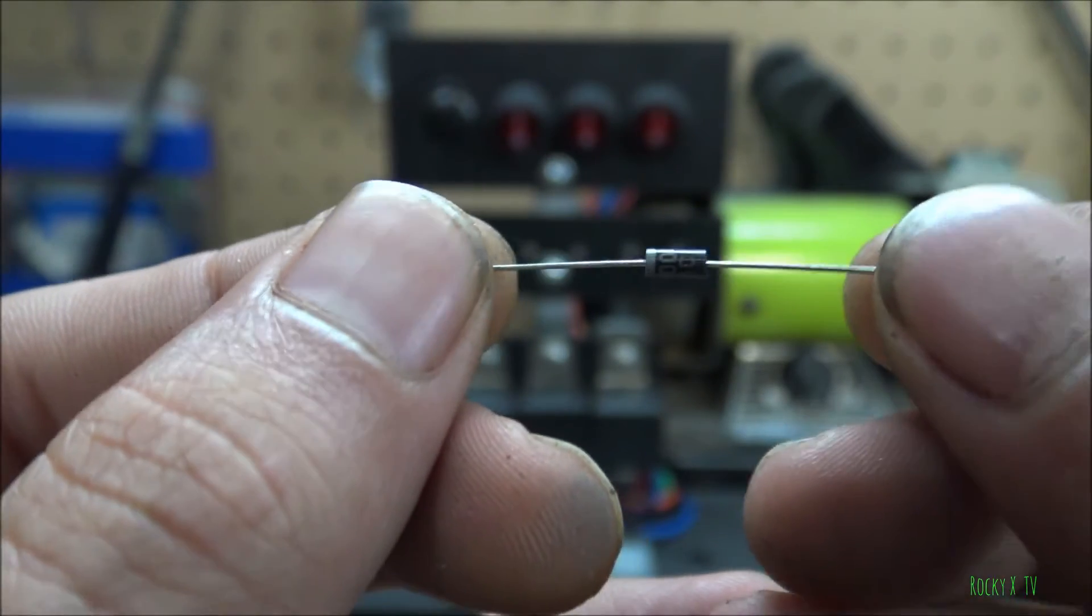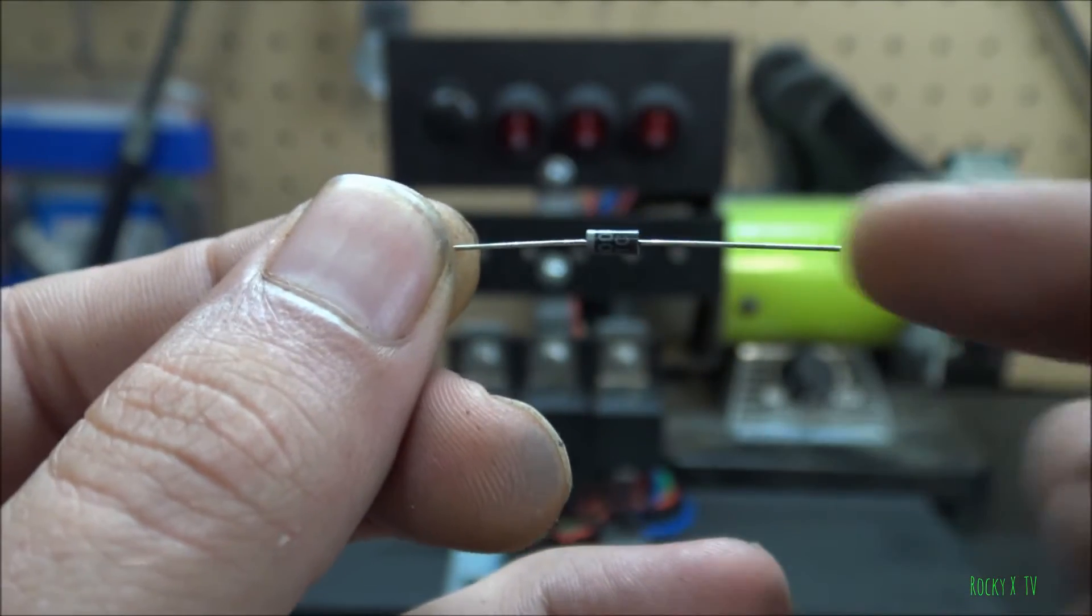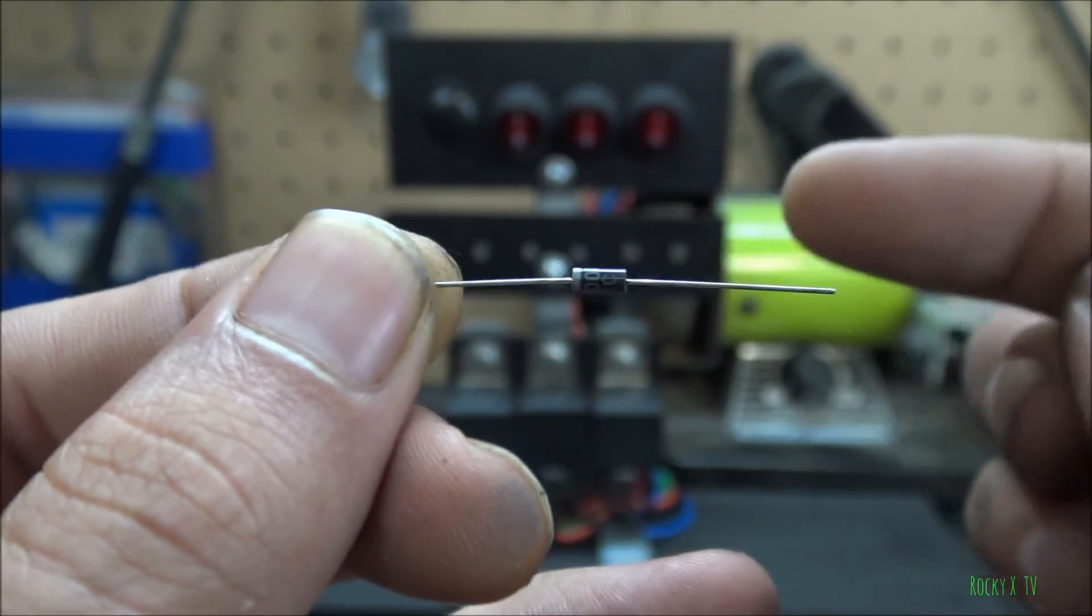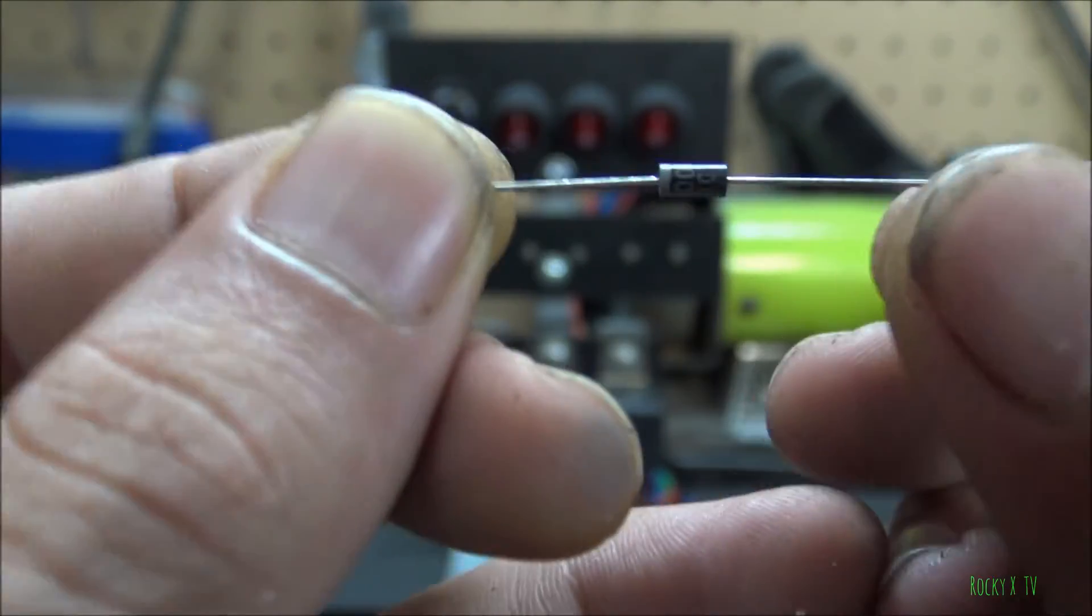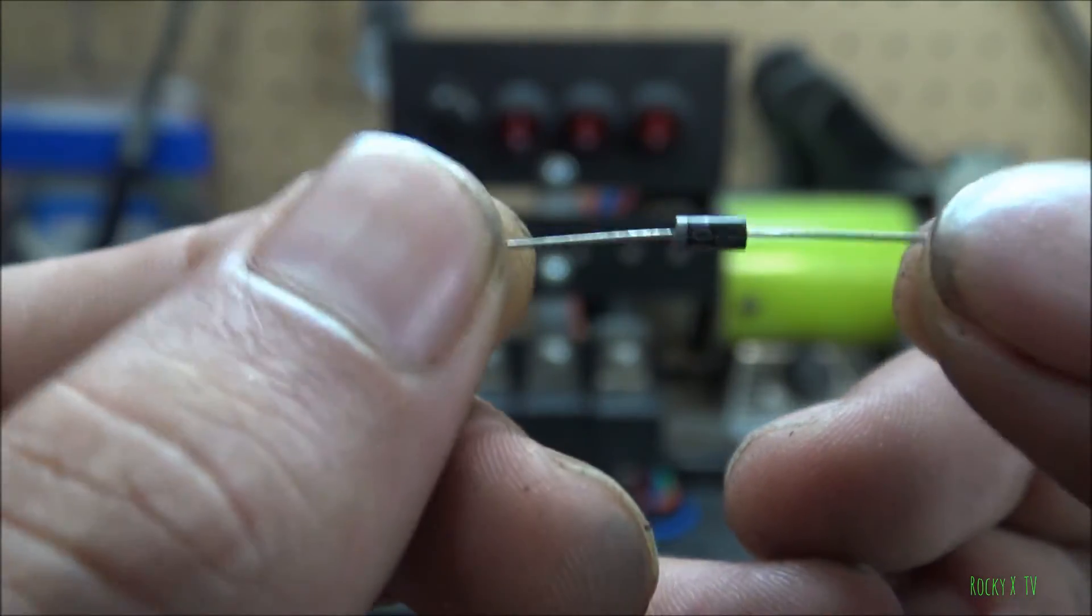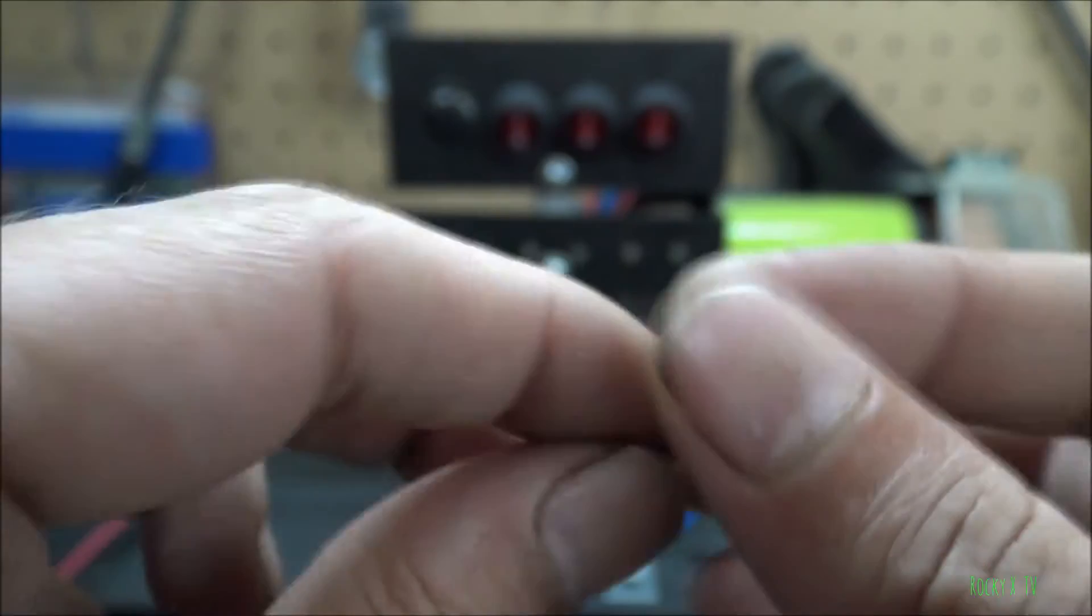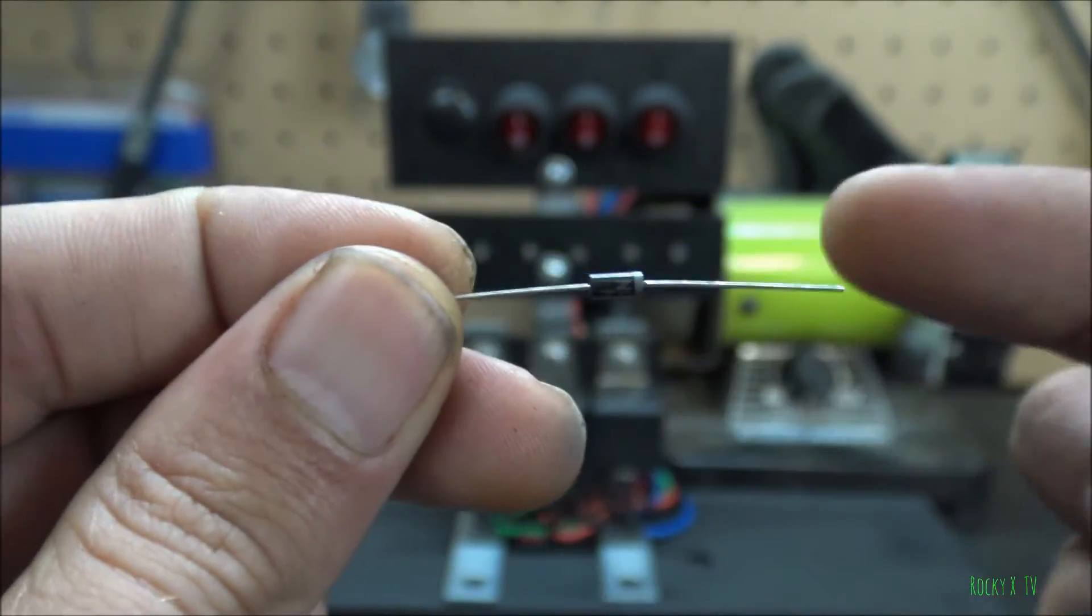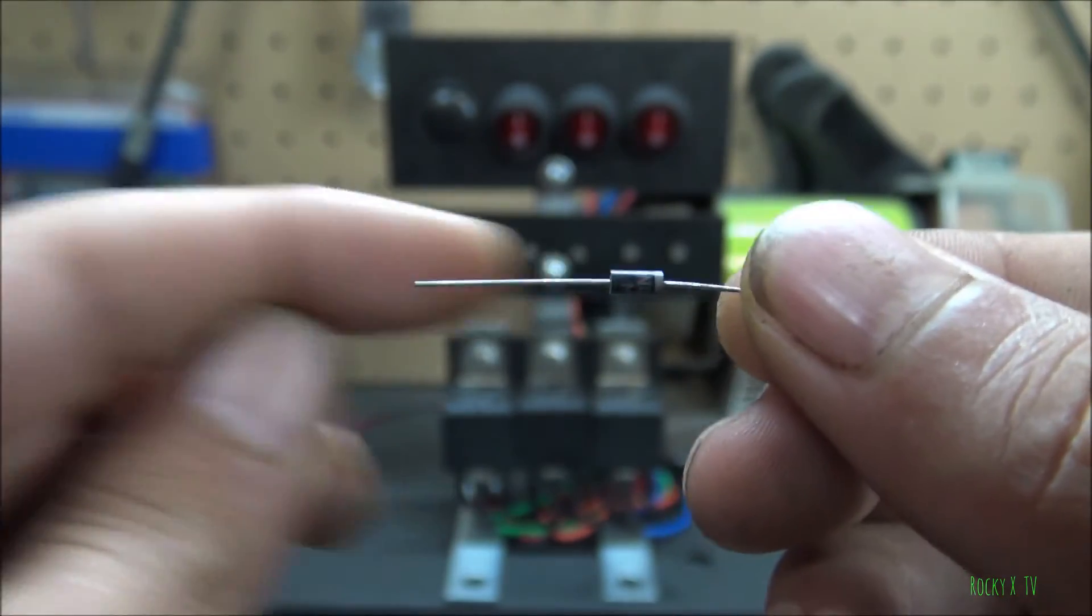This type of diode, a lot of people call them a blocker diode. It will only allow current to flow one direction, which will be towards this little silver band right here. Current will only flow that direction. If you flip it around, current will not go that way now. It will only flow towards the silver band.